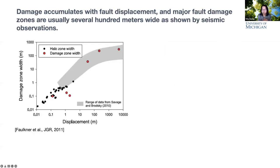An interesting observation about fault zone damage is that as fault displacement accumulates, there is gradual growth of the fault damage zone. Looking at macro-fracture data, as fault displacement increases there is an increase in fault damage zone width as well. After fault displacement gets larger than about 100 meters, there also seems to be a saturation of the fault damage zone.